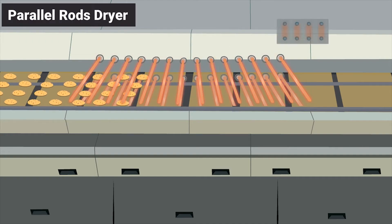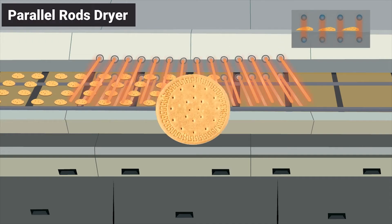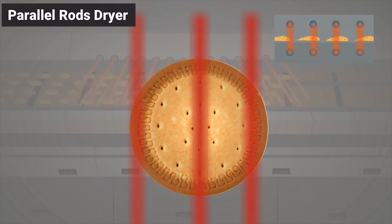Parallel rods could create a high-density, non-uniform field, which can lead to a poor moisture profile, which causes checking and product damage.